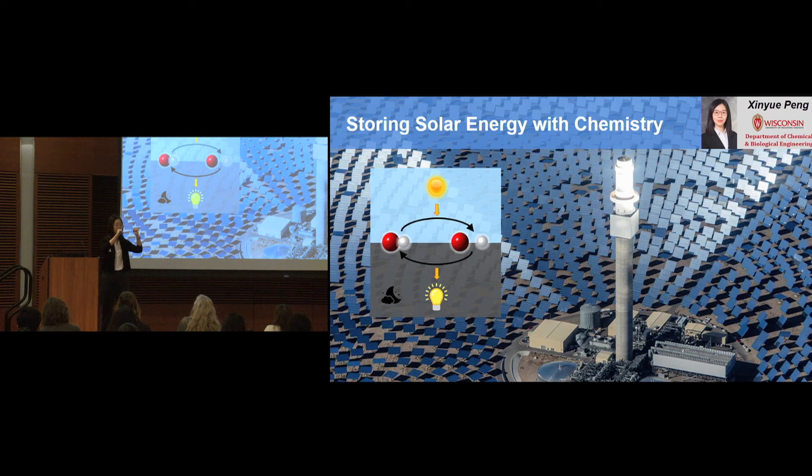When we need energy, we just let the parts go back together. When the chemical bonds are reformed, the energy is released. This reversible process can happen over and over again.